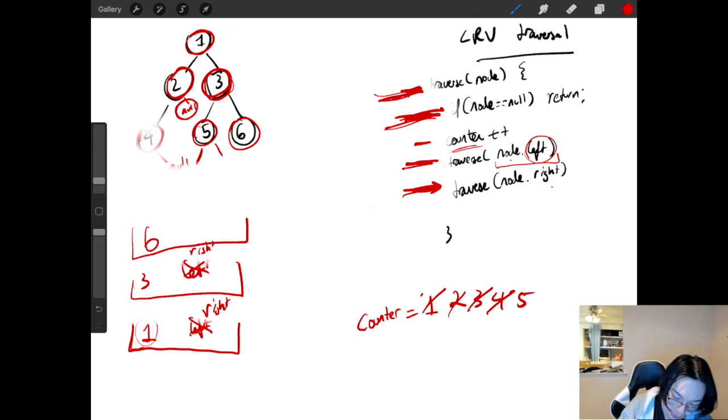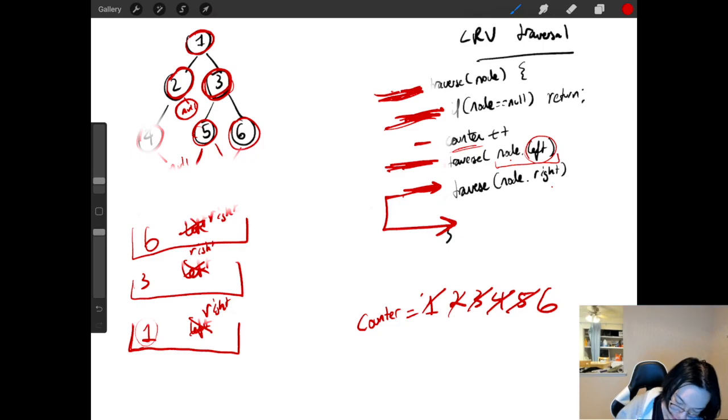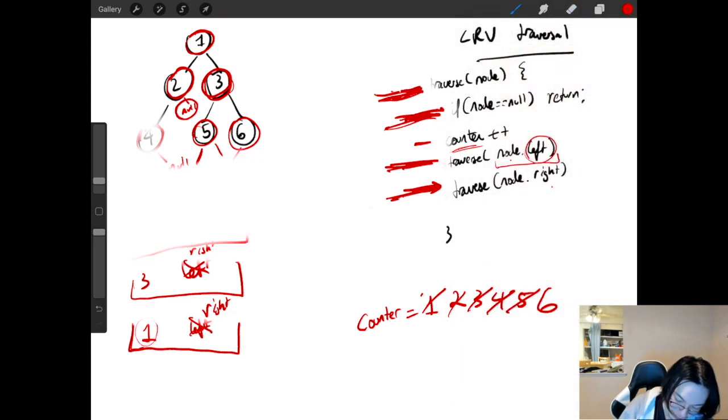Back to the top of the function. Node is equal to null. Return. Not null. Counter plus plus. Six. Traverse to the left. Mark where we left off. Null is pushed onto the stack. Begin at the top of the function. Node is equal to null. Return. Function is finished. Pick up where we left off with six. Here. Now we go to the right. Add null to the stack. Back to the top of the function. Node is equal to null. Return. Pop this function off the stack. Now we have six right. Pick up where we left off. No more function to go through. Pop this off the stack. Right. Now three is at right. Now I pick up where we left off with three. No more function call. Pop this off the stack. Pick up where we left off with one. Right. No more function call. Pop this off the stack.